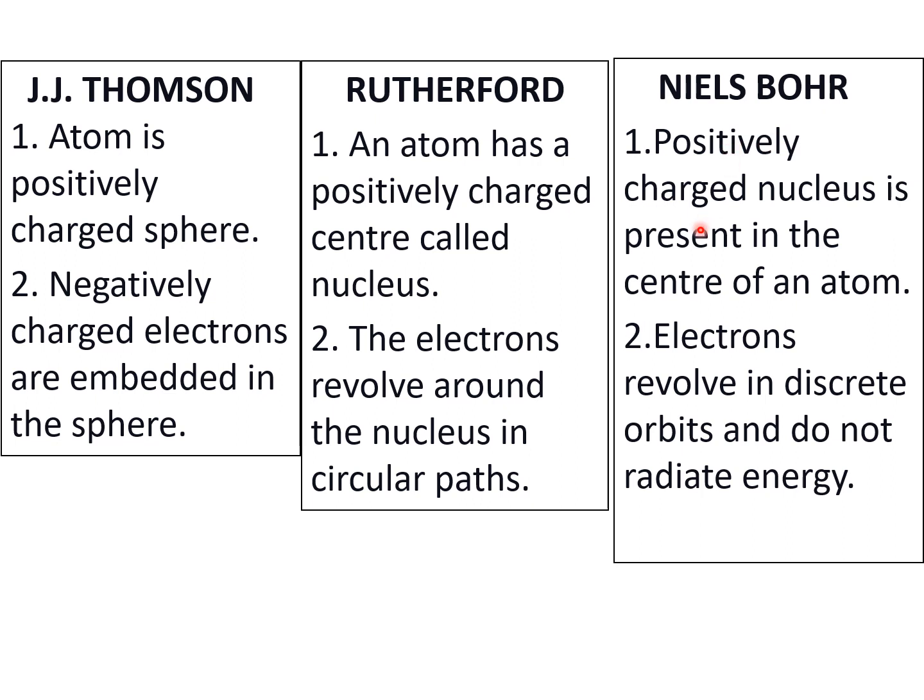Now what did Niels Bohr say? He said positively charged nucleus is present in the center of an atom, it is almost same as this. Then he said electrons revolve in discrete orbits and do not radiate energy. This point is slight modification of this point. He said they revolve in circular orbits but there was no mention of energy levels. So Niels Bohr said that electrons revolve in discrete, discrete means distinct, orbits and do not radiate energy.